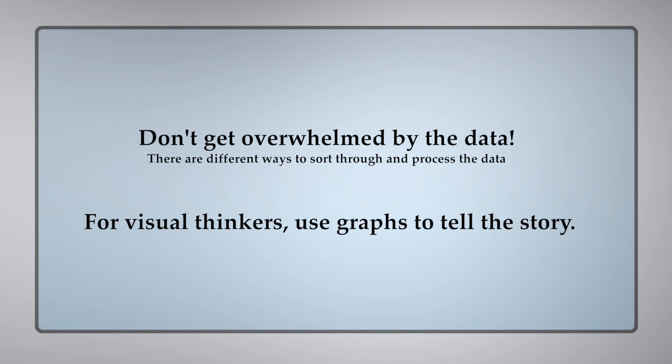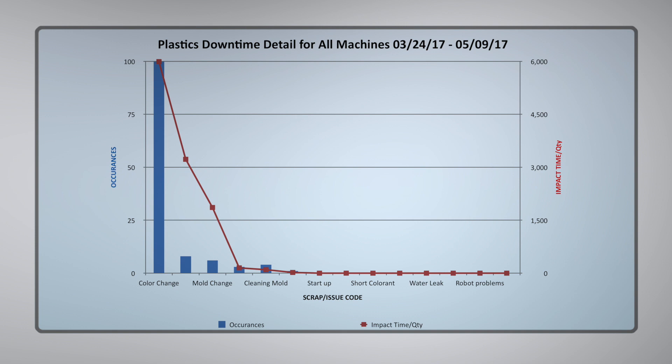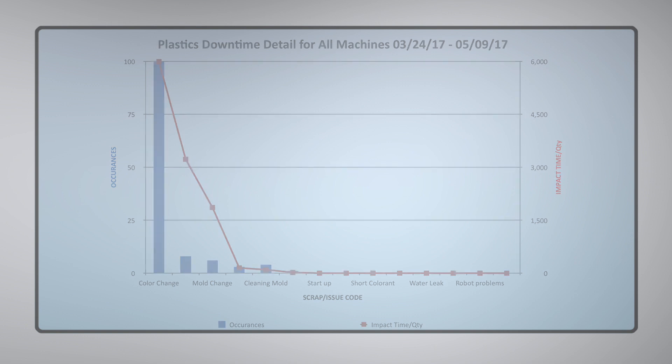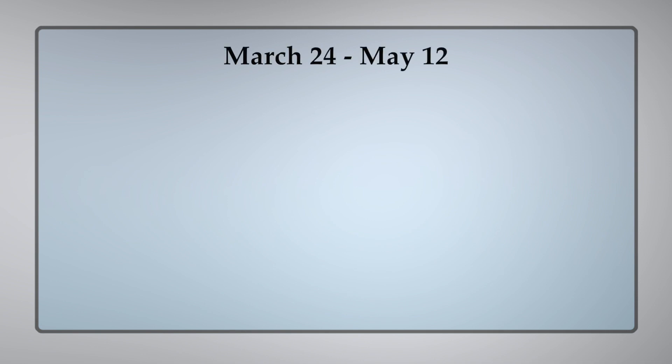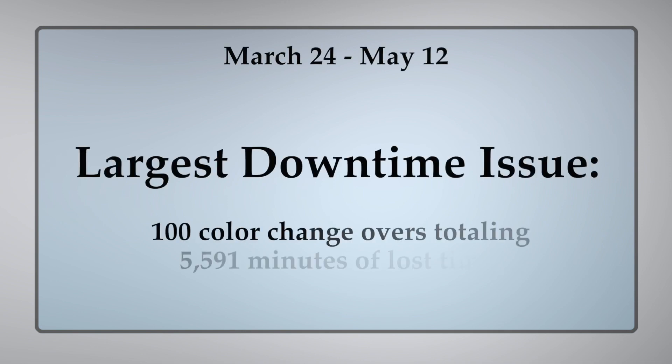I'm a visual person, so I like graphs to tell me a better story of what's happening. I added a tab to graph out my downtime. By looking at this, I can easily see that our number one downtime issue is color changeovers. The graph shows that between March 24th of this year and May 12th of this year, we had 100 color changeovers for about 5,591 minutes of lost time.